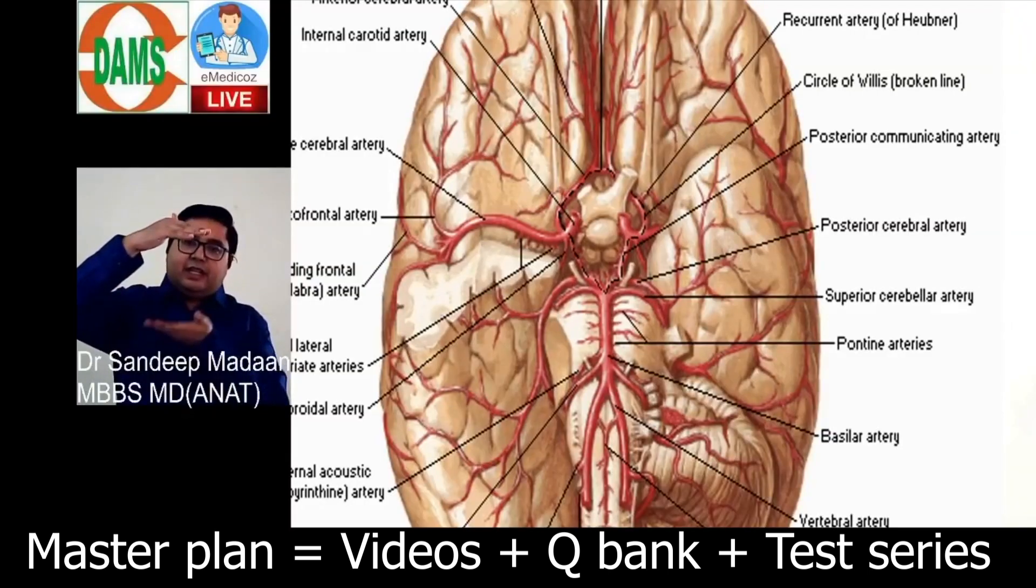Above is PCA, below is superior cerebellar artery. PCA is posterior cerebral artery, superior cerebellar artery - between these two arteries our nerve is passing through.